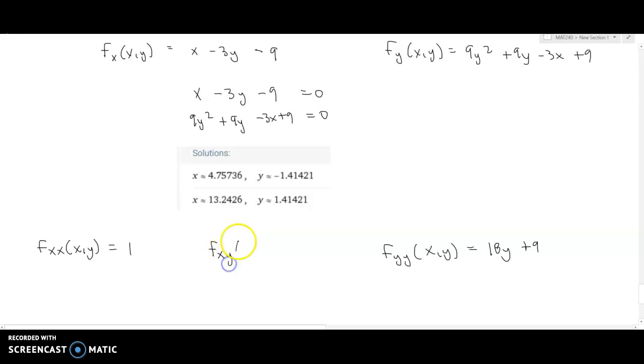Now the mixed partial, which is going to be the derivative of either of these two with respect to the other variable, you can see we'll get the same thing. But the derivative of this guy with respect to y is going to be negative 3. And so our D value is going to be 1 times 18y plus 9 minus negative 3 squared, which comes out to 18y plus 9 minus 9, which is simply 18y.